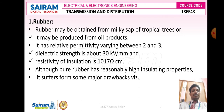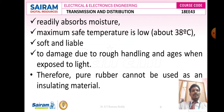The first insulating material is rubber. Rubber may be obtained from the silky sap of tropical trees or it may be produced from oil products. It has a relative permittivity εr which varies between 2 and 3, a dielectric strength of about 30 kV/mm, and resistivity of insulation ρ around 10¹⁷ ohms per centimeter. Although pure rubber has reasonably high insulating properties, it readily absorbs moisture from the atmosphere and soil. Its maximum safe temperature is low — it can withstand a maximum of 38°C — and it is soft and liable to damage due to rough handling and exposure to light. Therefore, pure rubber cannot be used as a direct insulating material.